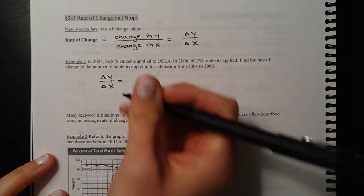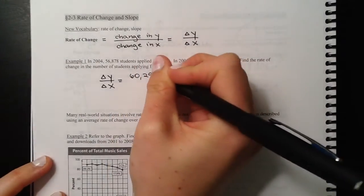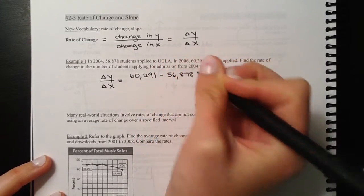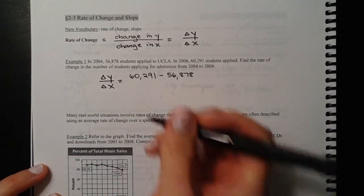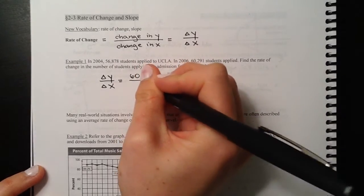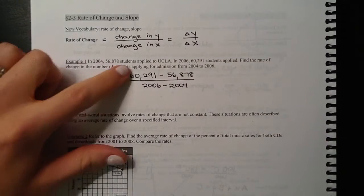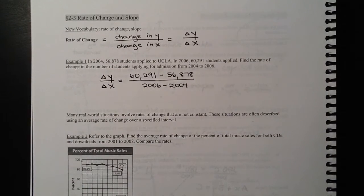So change in y, we had 60,291 students in 2006 minus 56,878 students in 2004. So that's the change in y, the change in the number of students. And then divided by change in x, which is the change in time. So this gives us a two-year time span. So this is the increase in the number of students divided by the time span. So we'll plug that in.